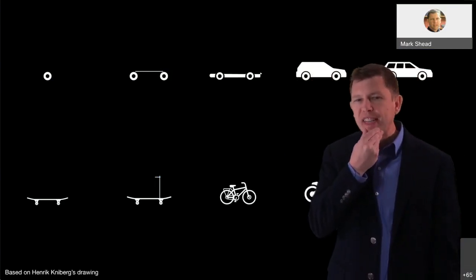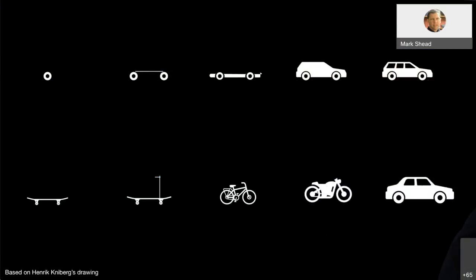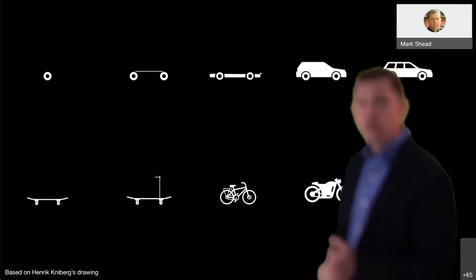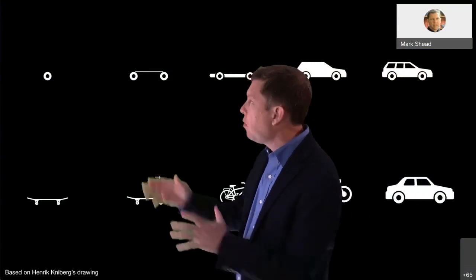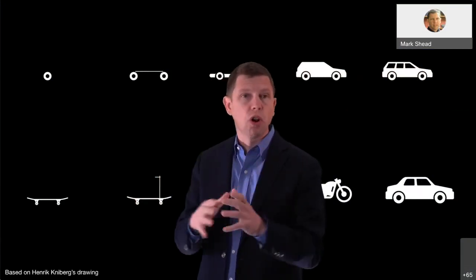So the customer says they want a car, and there's different ways to give them what they've asked for here. The top way is you give them a wheel. Say, we've designed this wheel, this wheel is perfect, this wheel will work on your car just the way you want it to. Here is your wheel.